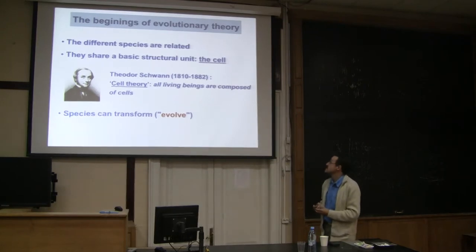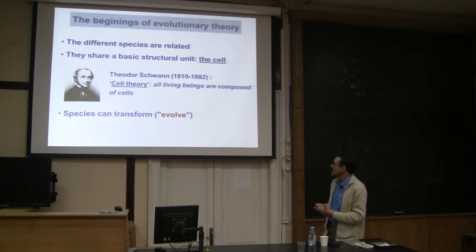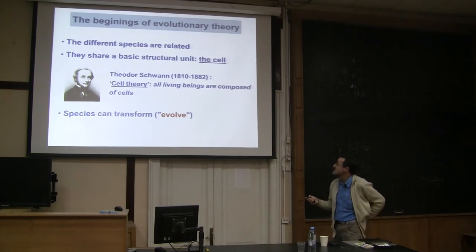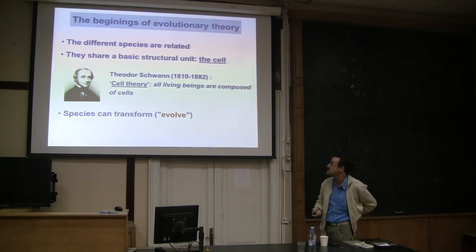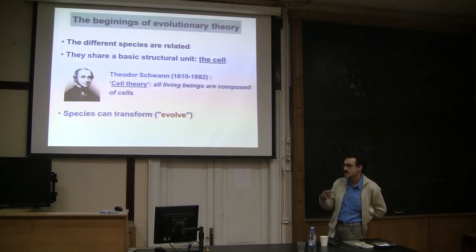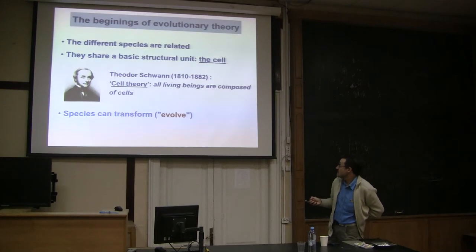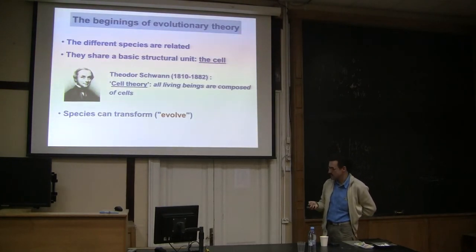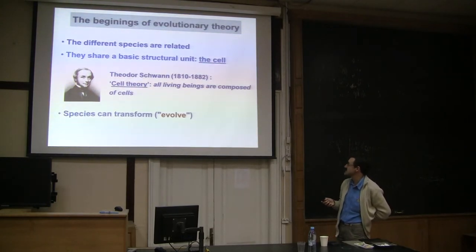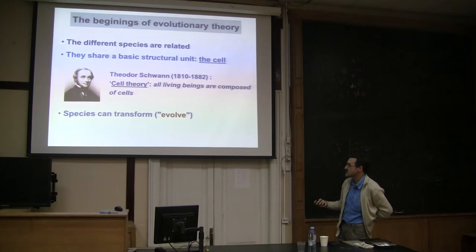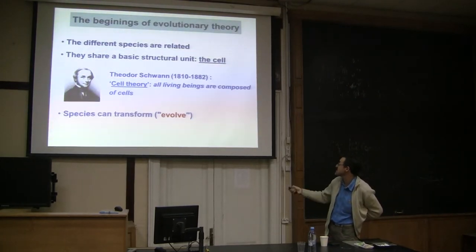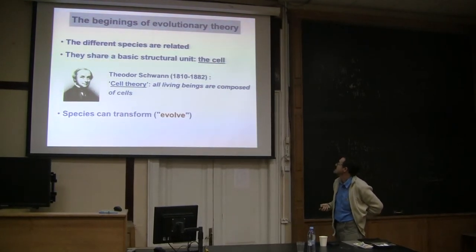Phylogeny was really developed together with evolutionary theory. One very important realization was that different species are related. One of the important points was that all living species are based on the same structural unit, which is the cell — the cell theory, developed by different people, perhaps most famously Théodore Schwan, who published this theory in the 19th century.